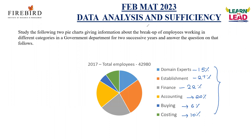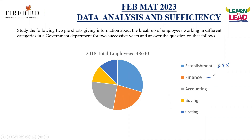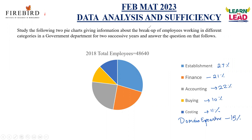Now let us see for 2018. In 2018, the total employees split up is as follows: establishment 27%, finance 21%, accounting 22%, buying 10%, costing 11%, and domain expertise 9%.